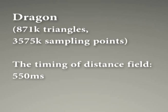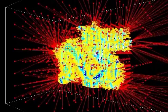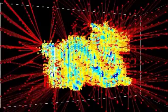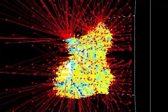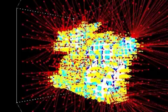We compute the adaptive distance field on Dragon with 871K triangles and 3,575K sampling points. We visualize the distance fields in playback video at normal speed, with colors from blue to red to denote increasing distance. We can see that our method can generate more sampling points close to the surface which contains more details.